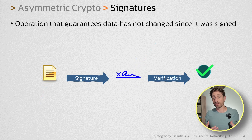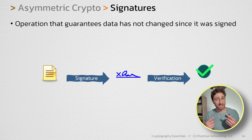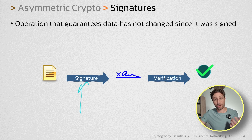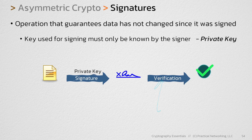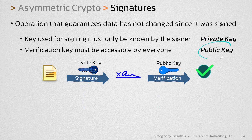Signatures are still an asymmetric crypto operation, which means two different keys are involved — one key to do the signature and the other key to do the verification. With signatures, the private key is the one that is used to create the signature and the public key is the one that is used to verify the signature.